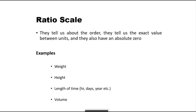The next scale is ratio scale. In ratio scale, we have all the features of interval scale plus an absolute zero point. Examples include height, weight, and length of time. Note that time itself is an example of interval scale, but the length of time — for example, the duration between 1 a.m. and 2 a.m. is 1 hour — is an example of ratio scale.